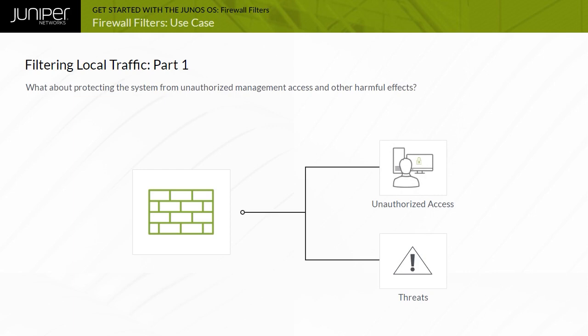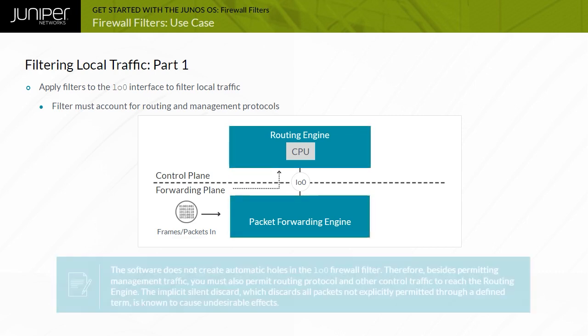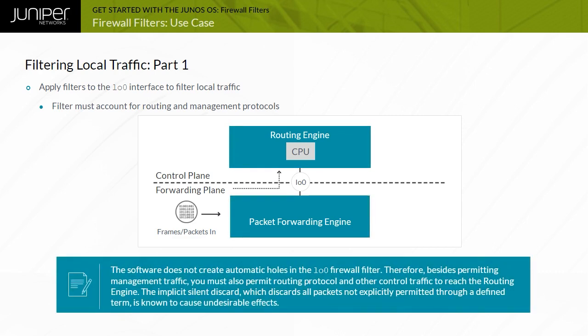What about protecting the system from unauthorized management access and other harmful effects? This concern is the idea behind applying a firewall filter to protect the routing engine. The packet forwarding engine applies these filters before traffic ever reaches the control plane. The software does not create automatic holes in the LO0 firewall filter. Therefore, besides permitting management traffic, you must also permit routing protocol and other control traffic to reach the routing engine.